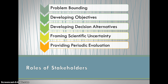Fifth, stakeholders play a role in providing periodic evaluation of the decision process. All components of the adaptive management process are subjected to re-evaluation. Stakeholders must be engaged in this re-evaluation process to refine the statement of objectives if needed, to add or remove decision alternatives, and to alter, change, or add models or research needs.